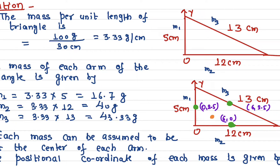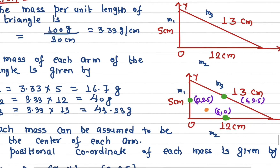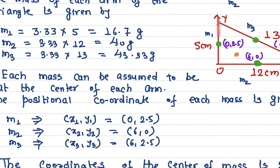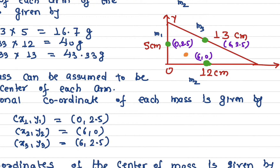This is a homogeneous wire, and we know the mass of each section. For a homogeneous rod, the center of mass of each side is located at its middle. For the 5 centimeter side, the center of mass is at 2.5 centimeters from the origin. For the 12 centimeter side, the center of mass is at 6 centimeters from the origin along the x-axis.